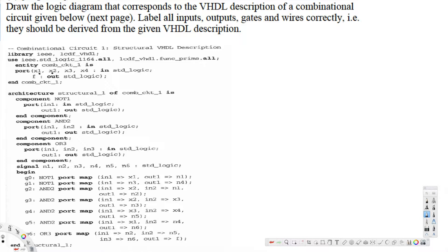g0 is a NOT gate. Let's draw that one. For g0, x1 goes inside of this. So let's draw x1 going inside of this one, and n1 is going out of this. This is x1 and this is n1.